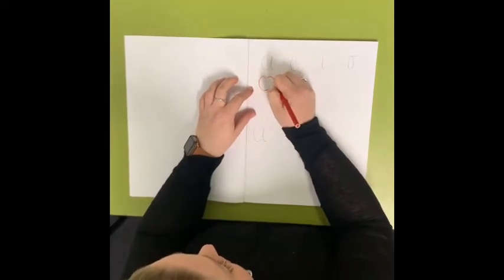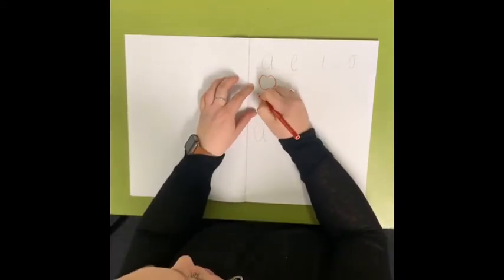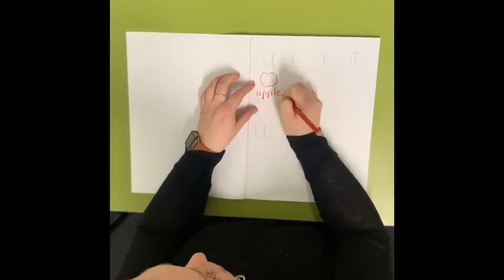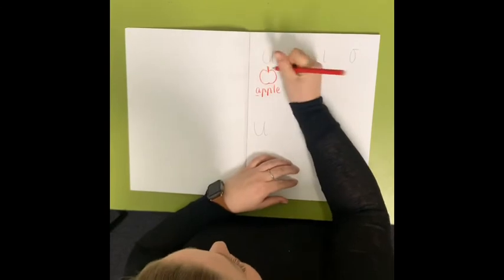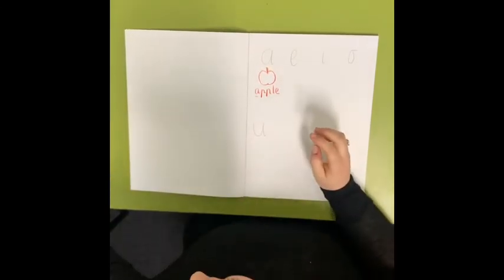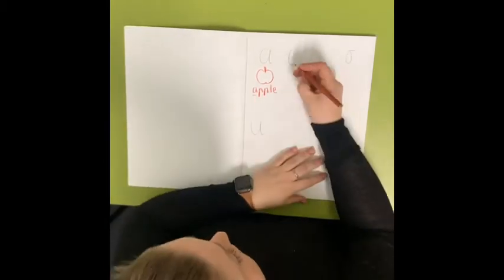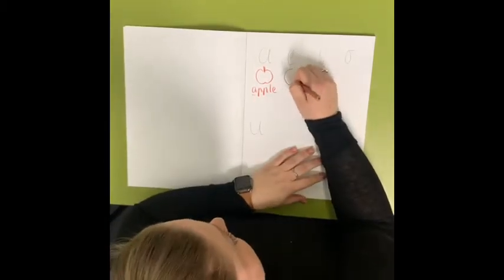A is A like in apple and remember to use the anchor chart to help you. A like in apple and I'll do E like in egg.